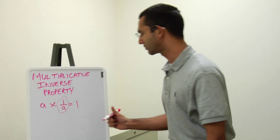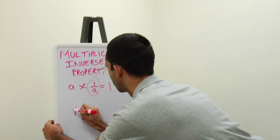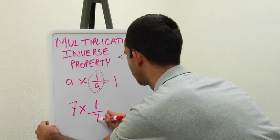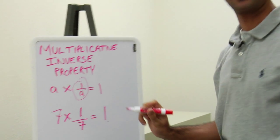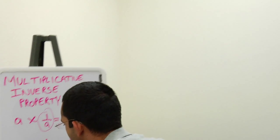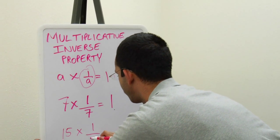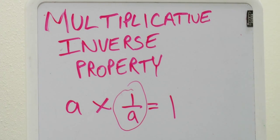I will give you some examples. We can do 7 times 1 over 7 which will equal 1. And another example will be 15 times 1 over 15 equals 1.